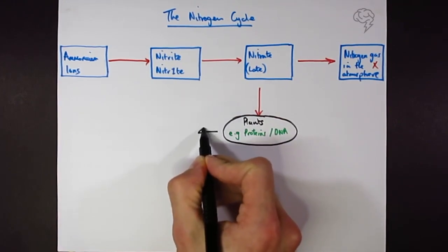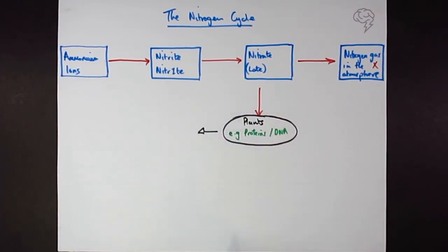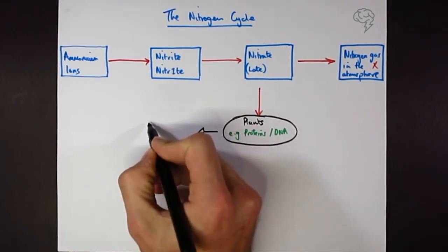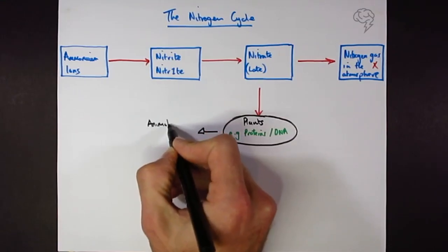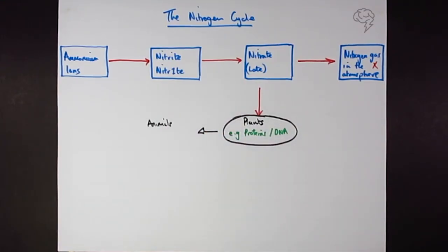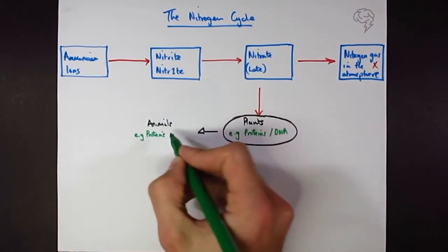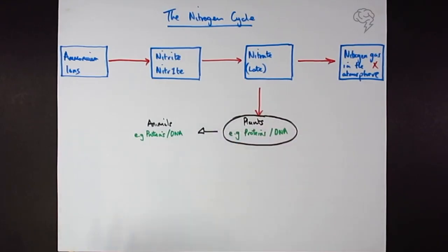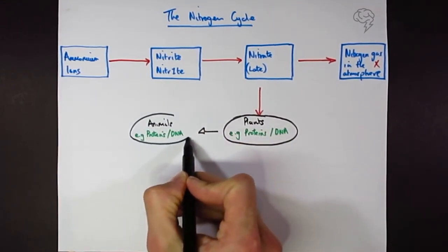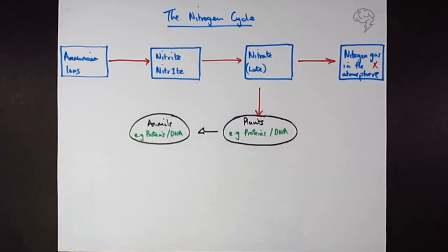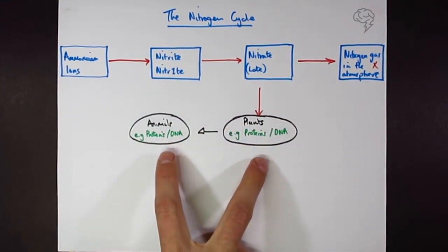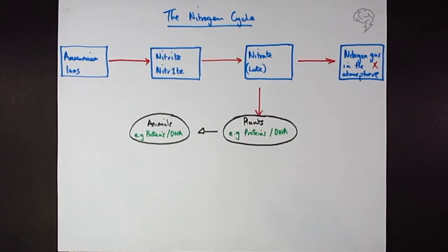This arrow for absorption is not the most important one. Animals get their nitrogen by eating plants. The nitrogenous compounds in animals are, like all living things, proteins and DNA — I'll repeat this many times. Animals are living, so they go in a round circle too.